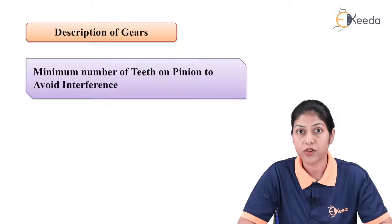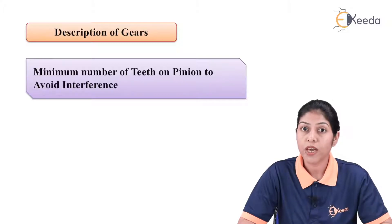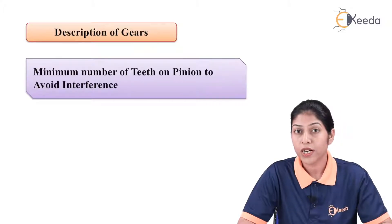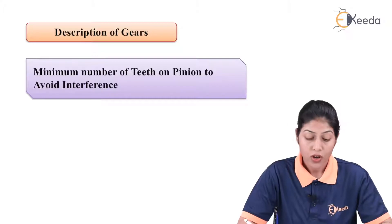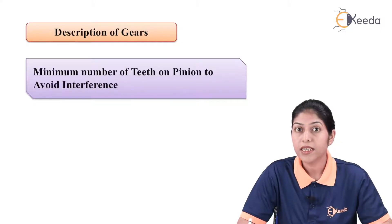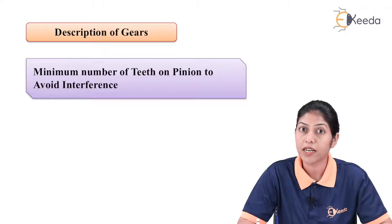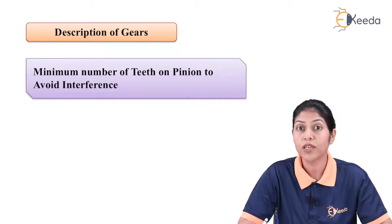That term is called interference of the involute gear. To avoid interference, we have to consider two interference points — the maximum limit of the addendum circle radius, represented by mn. If we define the addendum circle radius as cutting the tangent on the base circle at the point of tangency, that condition helps avoid interference during meshing when two gears are in rotating condition.